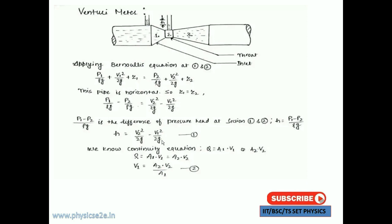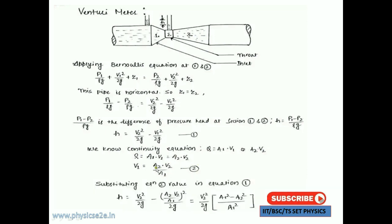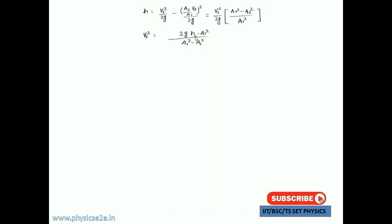Since area times velocity is conserved, q equals a1·v1 equals a2·v2. From this equation, v1 equals a2·v2 divided by a1. Substituting v1 into the h equation: h equals v2²/2g minus (a2/a1)²·v2²/2g. Simplifying: h equals v2²/2g times (a1² minus a2²) divided by a1².